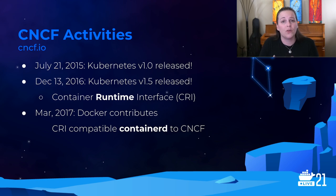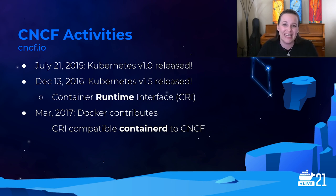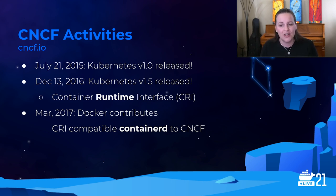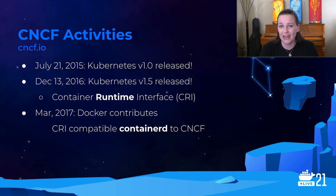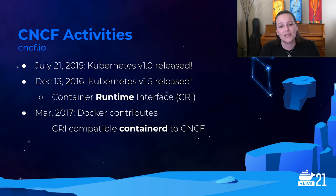Right on the heels of that first Kubernetes release, version 1.5 came out, which included the container runtime interface, or CRI. The CRI is a level of abstraction that allows Kubernetes to support alternative low-level container runtimes. Docker, the company — also a member of the CNCF — well on their way to breaking up their huge tech stack, contributed their CRI-compatible runtime called Containerd. Containerd was developed in order to integrate RunC in Docker version 1.11. I'll explain what RunC is in a minute.